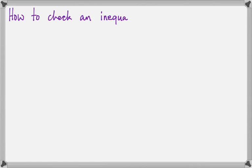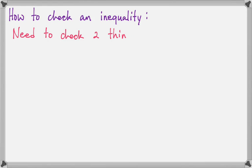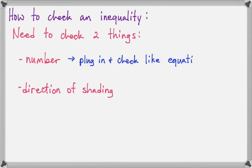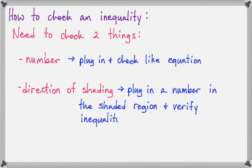Now I'm going to check one of these with you. And the way you check an inequality is you have to check two things. The first thing is you have to check whether you got the correct number. And then you have to check whether you shaded in the correct direction. To check the number, you just plug it in and check it exactly like it was an equation. And to check the shading, you plug in any number in the shaded area and then verify that the inequality comes out true.